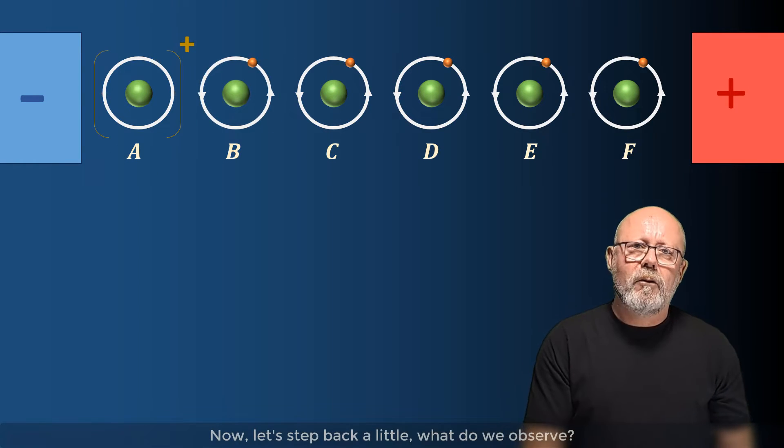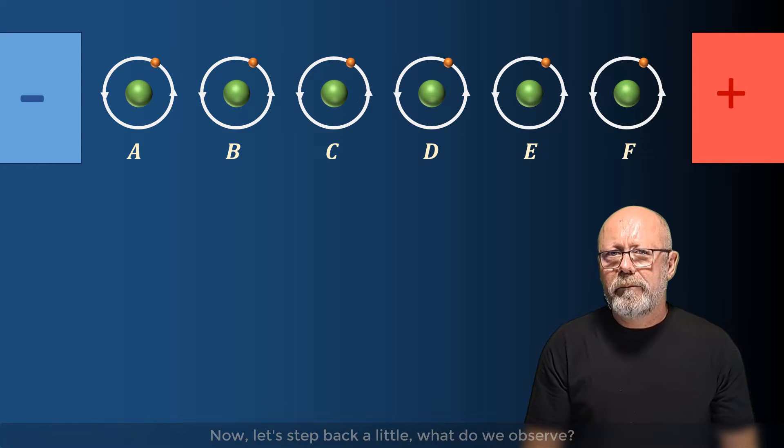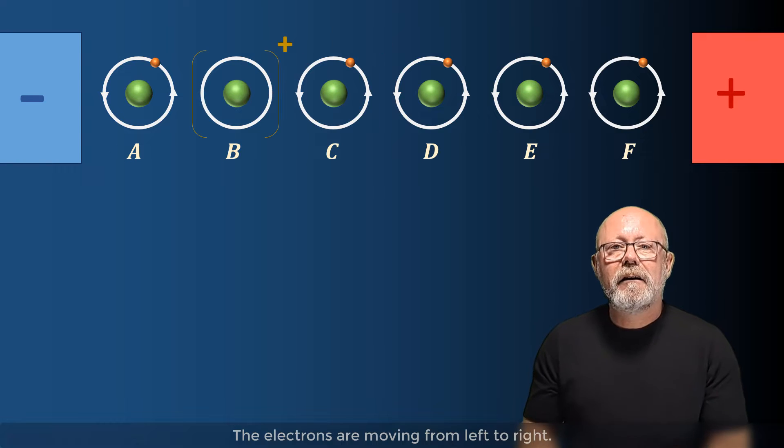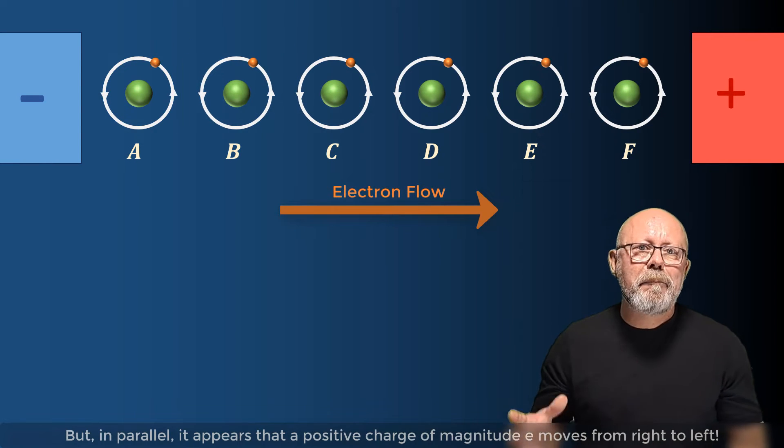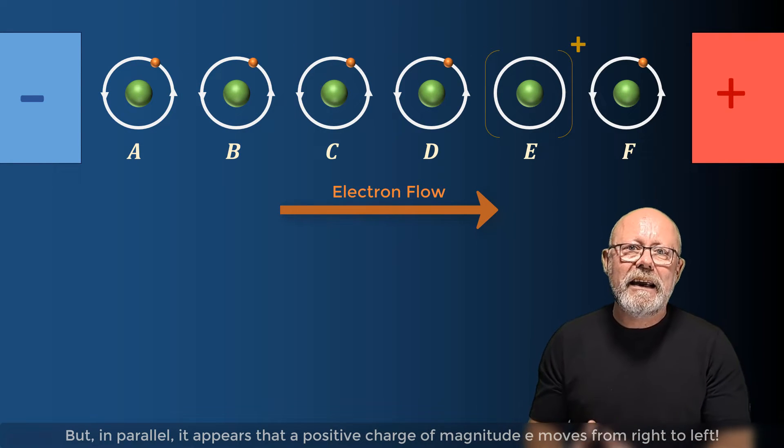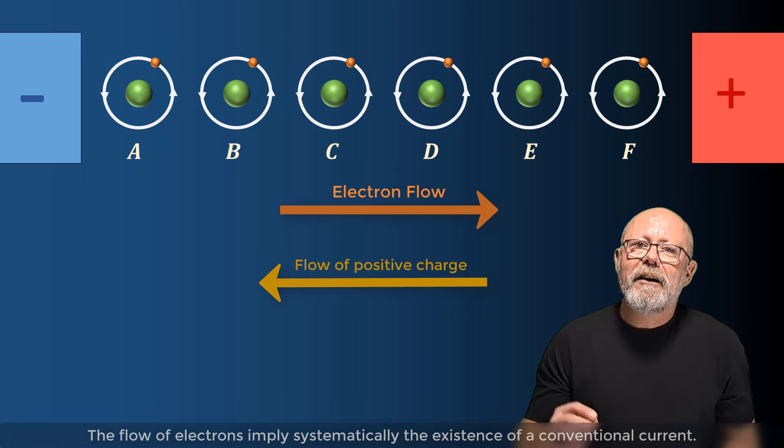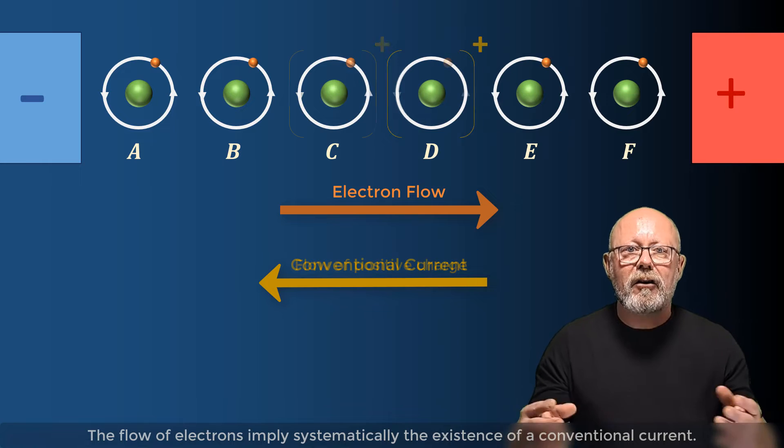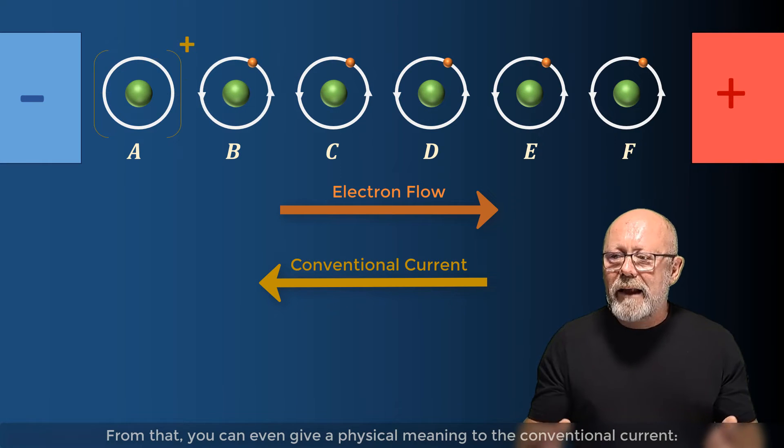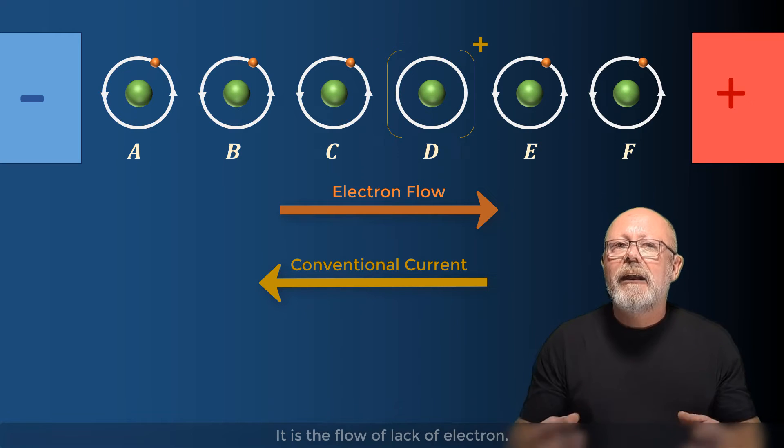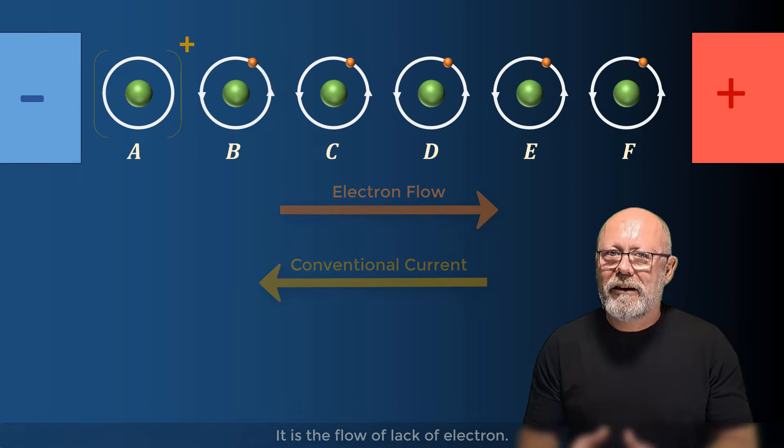Now, let's step back a little. What do we observe? Yes, the electrons are moving from left to right. But in parallel, it appears that a positive charge of magnitude E moves from right to left. You can see that the flow of electrons implies systematically the existence of a conventional current. From that, you can even give a physical meaning to the conventional current. It is a flow of lack of electrons.